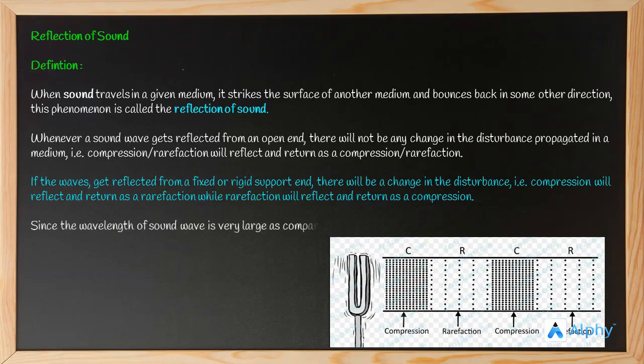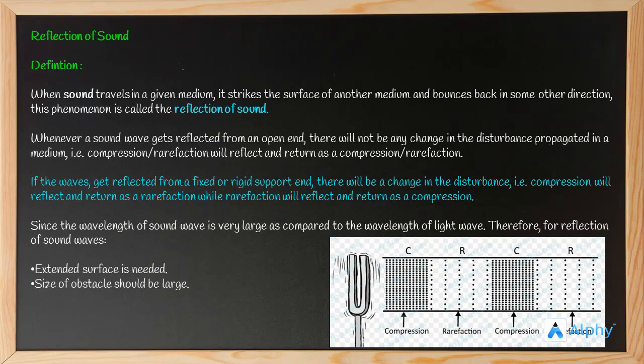Since the wavelength of a sound wave is very large as compared to the wavelength of a light wave, therefore for reflection of sound: extended surface is needed, size of an obstacle should be large, surface need not necessarily be smooth or polished, and the surface may or may not be curved. So for reflection of sound, these conditions are necessary. The surface or obstacle should be large because the sound's wavelength is large. The surface need not be smooth or polished, and it may also be curved.